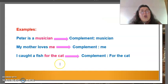Now, we are going to review some examples. The first example: Peter is a musician. In this case, the complement is the word musician.